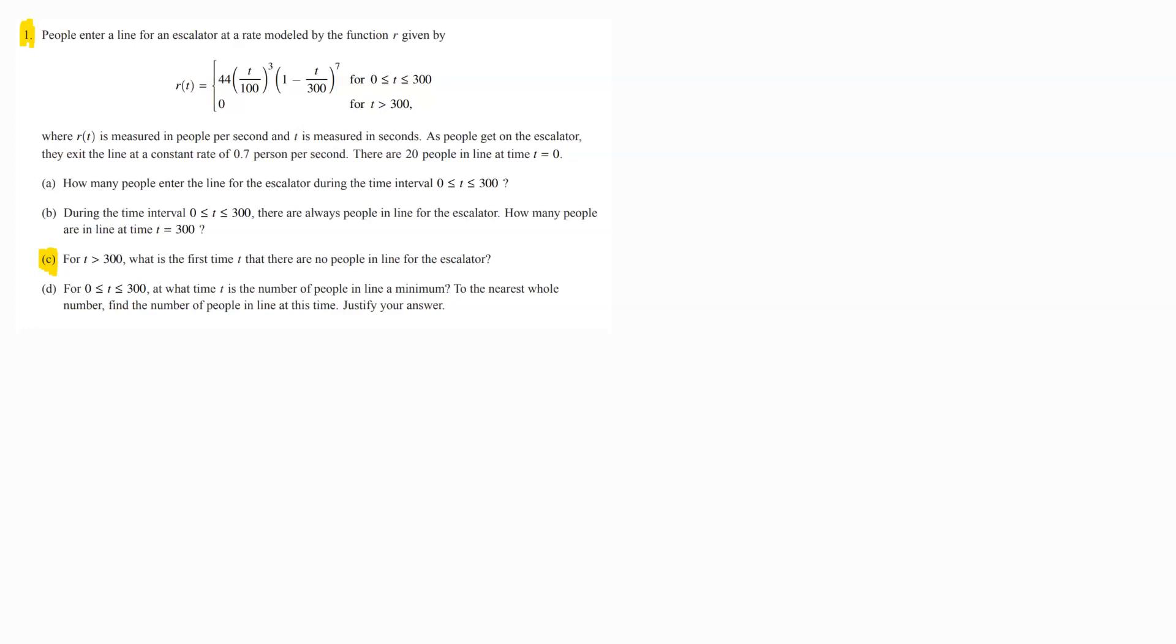Alright, so what they're saying on this one is for T greater than 300, what is the first time T that there are no people in line for the escalator? So, the first thing we would have to do is you would want to use what you know from Part B here.